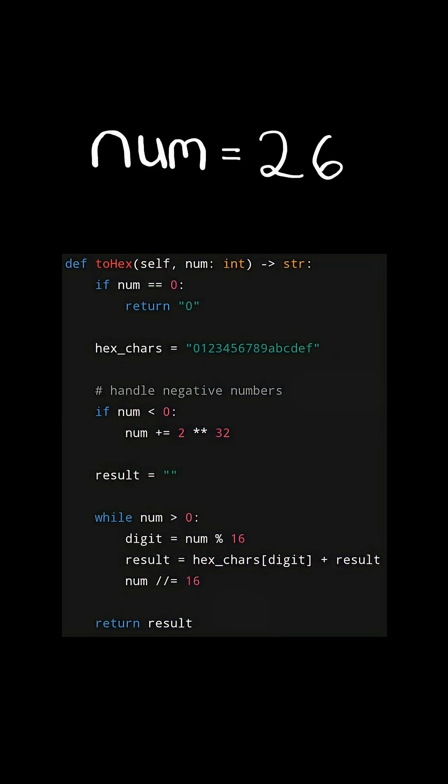Now let's solve the actual problem. If num equals 0, then we return the hexadecimal string 0. We then create a string of all the hexadecimal symbols. And if the number is negative, we convert it to its 2's complement. We then initialize a resulting string.